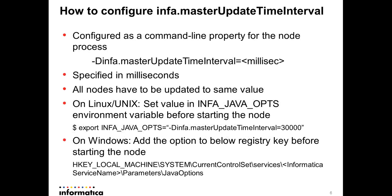Now let's look at how to configure info.masterupdate time interval — the heartbeat message periodicity from all non-master nodes to the master gateway node. This is configurable as a command-line property for the node process, specified as: -Dinfo.masterupdate.time.interval=<value in milliseconds>. Note that this differs from master db refresh interval, which is specified in seconds, while master update time interval is in milliseconds.